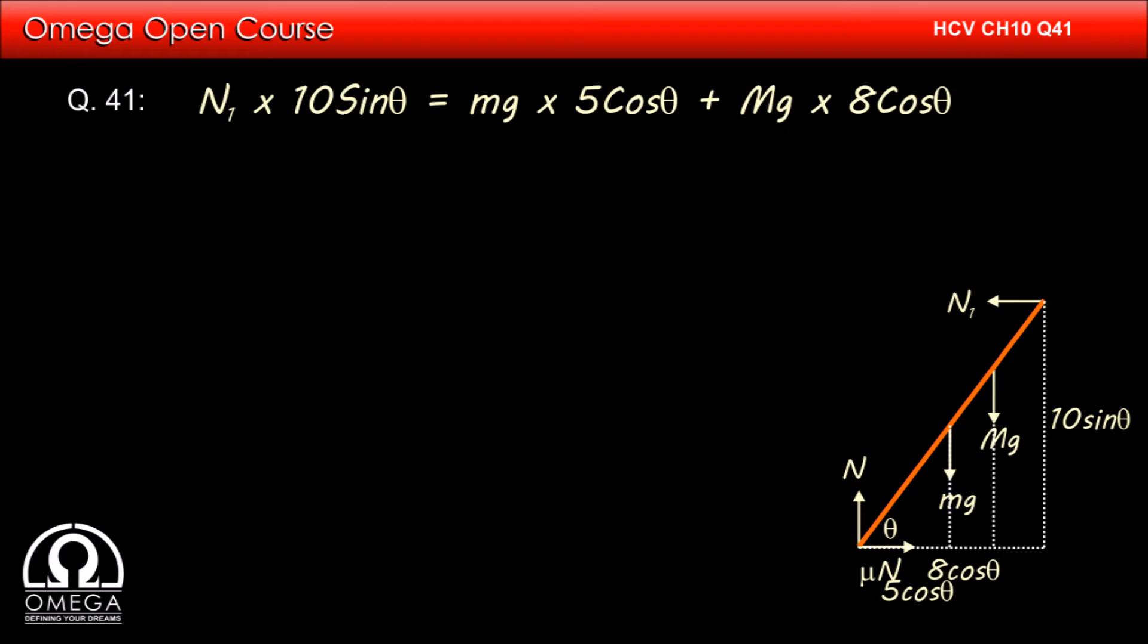Balancing the torque about the lower end of the ladder, we get N₁ × 10sinθ equals mg × 5cosθ plus Mg × 8cosθ. Since we have taken θ to be the angle the ladder makes with the horizontal and the ladder is making 37 degrees with the vertical, θ will be 53 degrees.